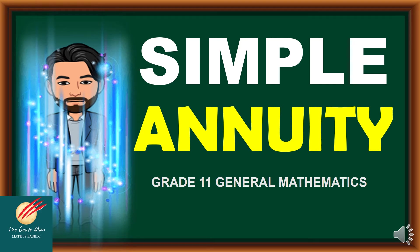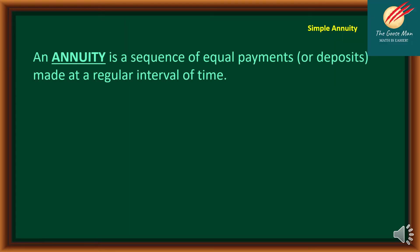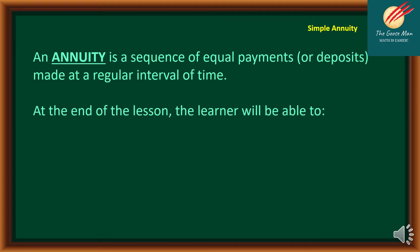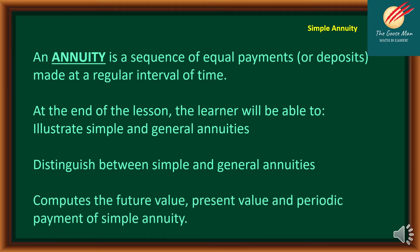Hello and good day, welcome back to our class. This is Teacher Ony Degusman and our topic for today is simple annuity for Grade 11 General Mathematics. An annuity is a sequence of equal payments or deposits made at a regular interval of time. At the end of the lesson, the learner will be able to illustrate simple and general annuities, distinguish between them, and compute the future value, present value, and periodic payment of a simple annuity.